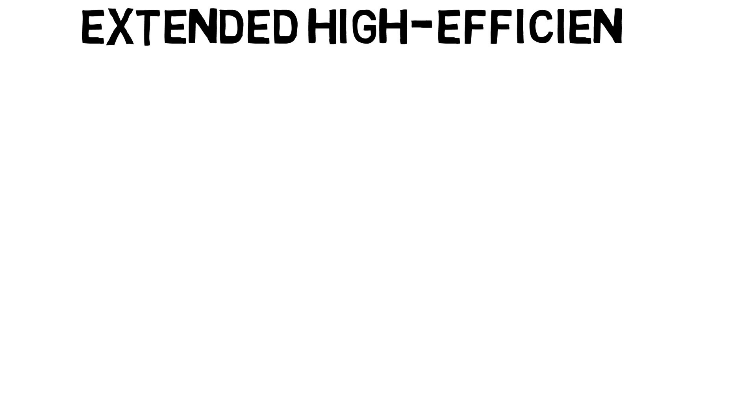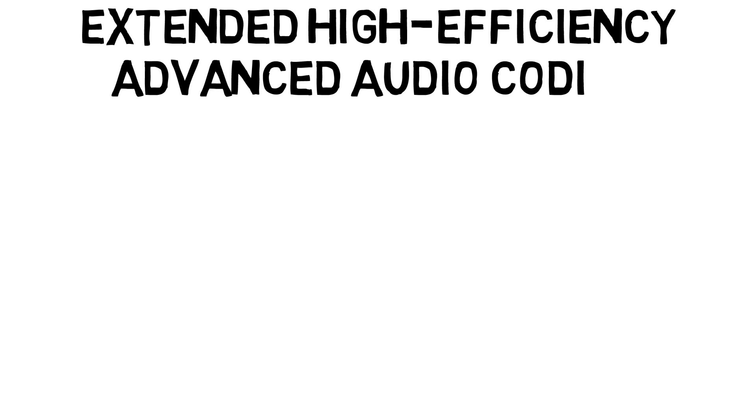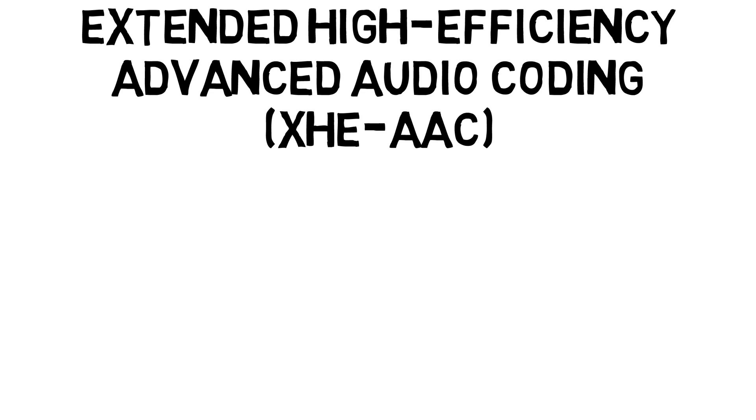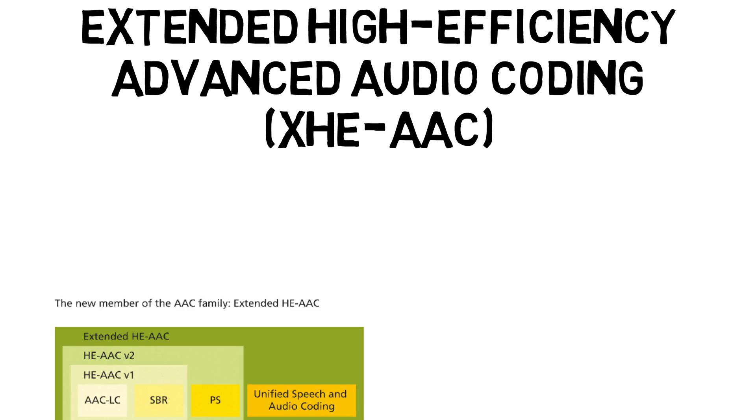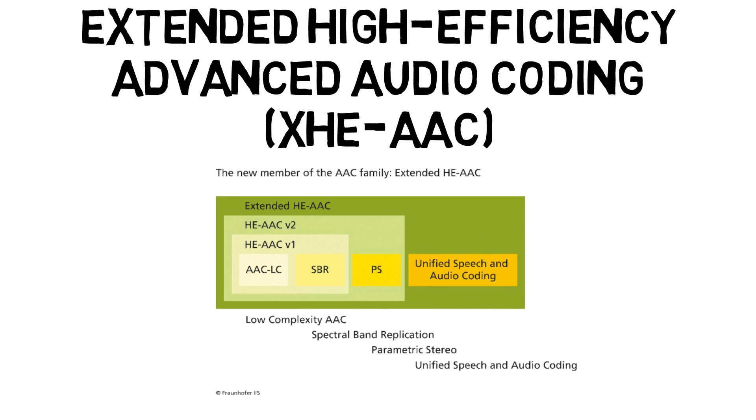That takes us up to the current technology, which is XHEAAC. There we're making other improvements. One of those improvements is speech quality. As you go down in bit rate with a traditional general perceptual audio coder — which the AAC family is — you begin to have problems with raspiness on speech. Speech doesn't sound natural at a bit rate where music would be okay. You often hear this on radio: the music sounds fine, but the announcer comes on and if it's a low bit rate, there's a little distortion, a little raspiness in the voice.